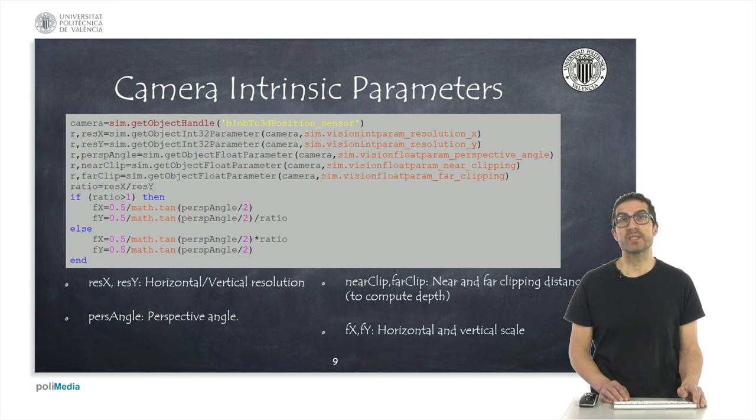Now, let's see how to access all this information. We need to create, in this case, a script that will be associated to the robot base, if you don't have already this script created. And, in the syscall init function, we must access the camera handle and obtain information about its intrinsic parameters.